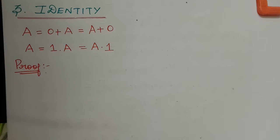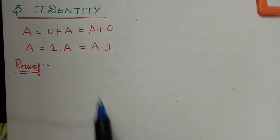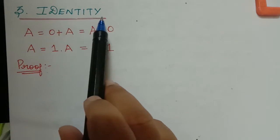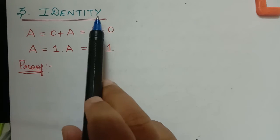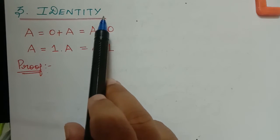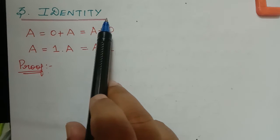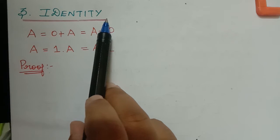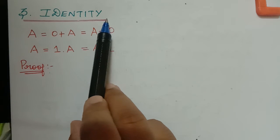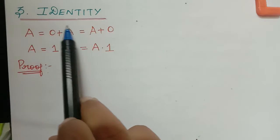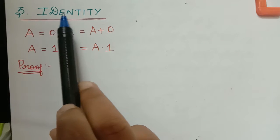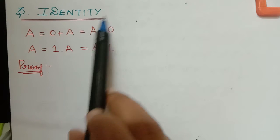Hello students. Let us see the next property of arithmetic operations on intervals. The next property is identity. Previously, we have learned the property of commutativity and associativity. Now let us learn the property of identity.